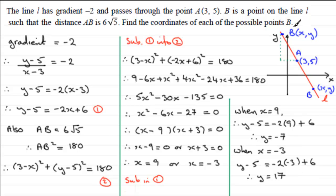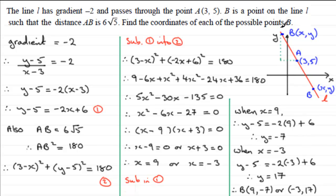So to find the coordinates of each of the possible points B: when x is 9, y is minus 7, so B has coordinates (9, minus 7). Or when x is minus 3, y is 17, so B has coordinates (minus 3, 17). Checking on the diagram: 9 across, 7 down looks reasonable; and minus 3, 17 — being more than 5 up — looks consistent. That's another reason for having a diagram; you can check whether your answers look consistent.